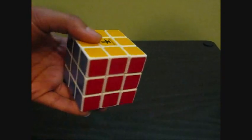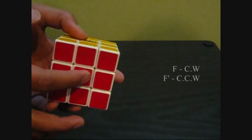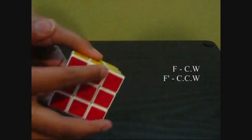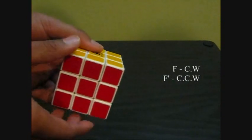So it's very basic. If I say F, this side, you're going to turn it clockwise. So if you're going to face this side and turn it clockwise, if I say F prime, counterclockwise.